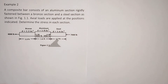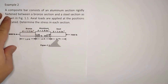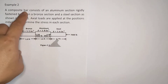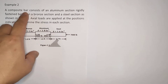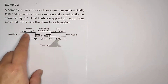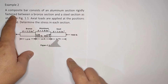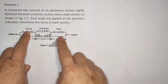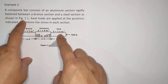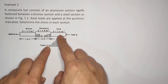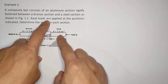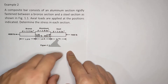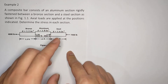Let's answer example number 2. The problem states: a composite bar consists of an aluminum section rigidly fastened between a bronze section and a steel section. This is the bronze, this is the steel, as shown in figure 1.1. Actual loads are applied at the positions indicated. Determine the stress in each section.